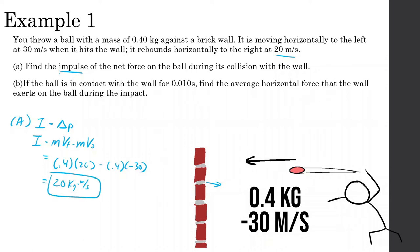Part B says: if the ball is in contact with the wall for 0.01 seconds, find the average horizontal force the wall exerts on the ball. We know impulse equals force times time. The impulse is 20, the time is 0.01 seconds, so force equals 20 divided by 0.01, which gives us 2,000 newtons.